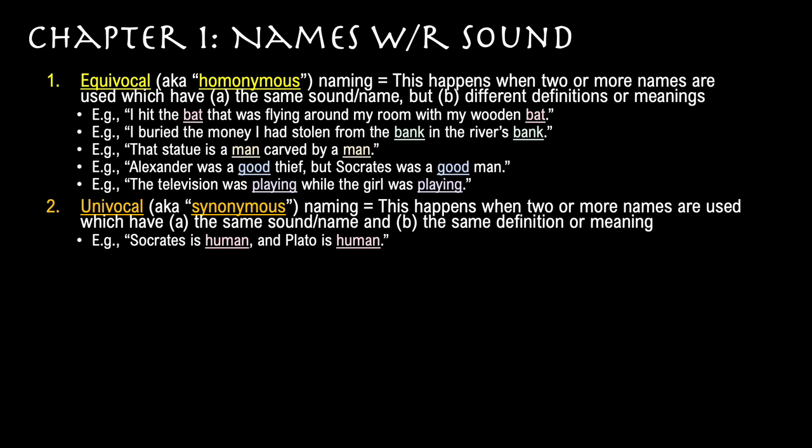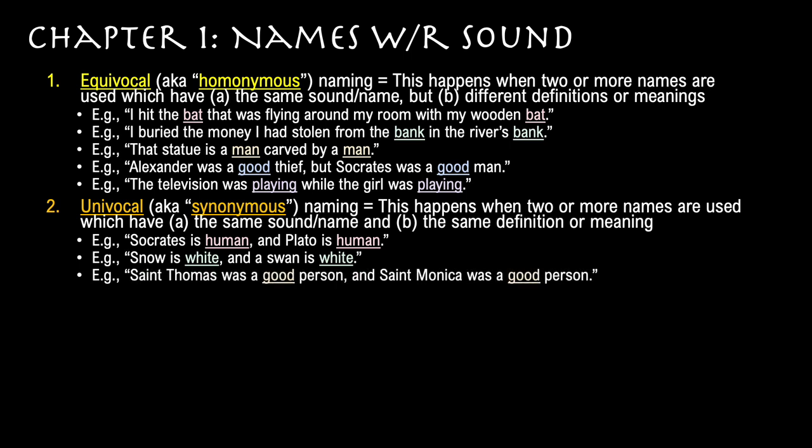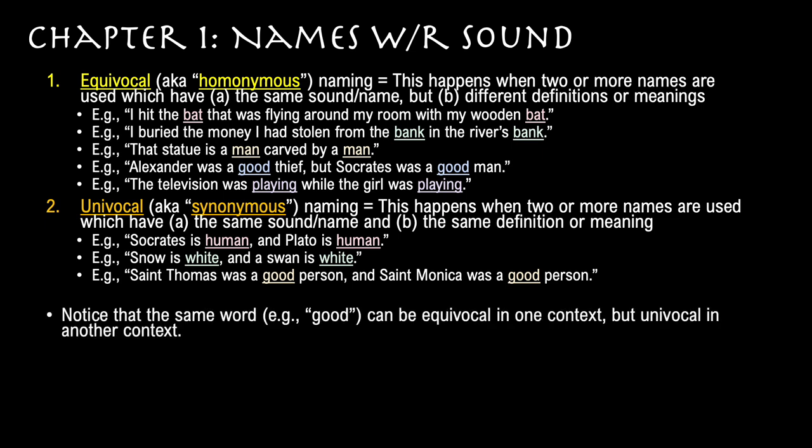Here's an example: 'Socrates is human, and Plato is human.' Notice that human has the same meaning as predicated of Socrates and as predicated of Plato. 'Snow is white, and a swan is white.' White means the same thing predicated of a swan as it means predicated of snow. 'St. Thomas was a good person, and St. Monica was a good person.' Once again, we have a sound repeated according to the same definition, and therefore we have univocal naming. Notice that the same word, such as good, can be equivocal in one context but univocal in another context. So never say that a word is equivocal or univocal unless you specify the context.